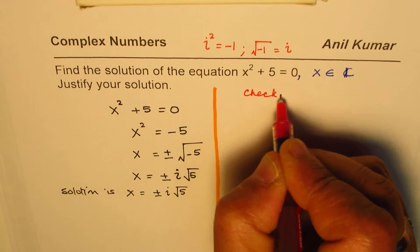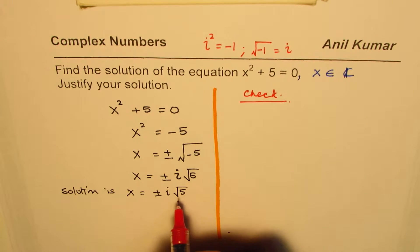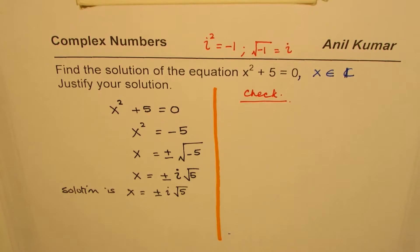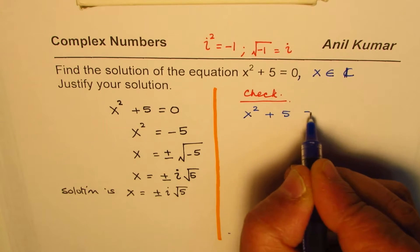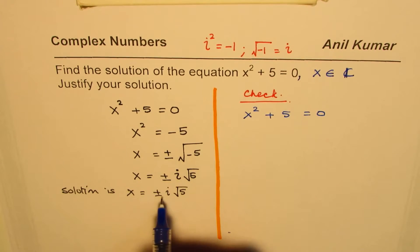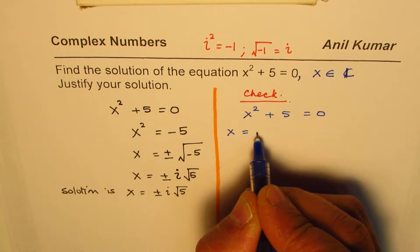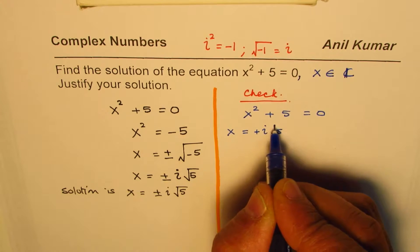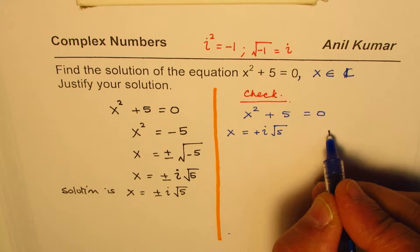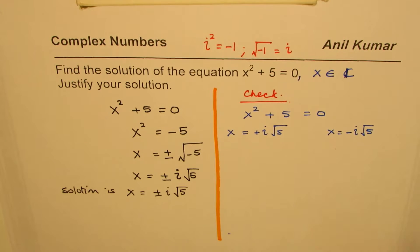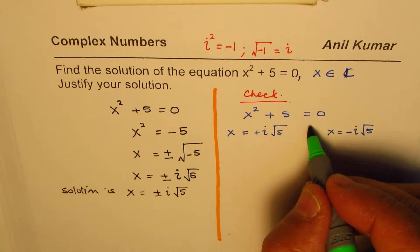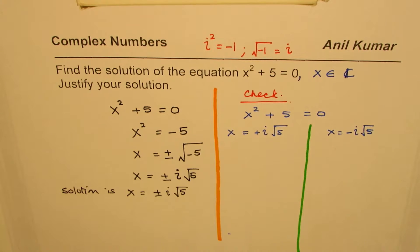So that means let us check it. To justify, we'll substitute the solution back into the equation and see whether the equation works or not. So the equation here is x² + 5 = 0. We found two solutions. So we'll try x = +i√5, and then we'll also try x = -i√5. These are the two solutions which we got, and we'll check both of them. Let's begin with the first one.